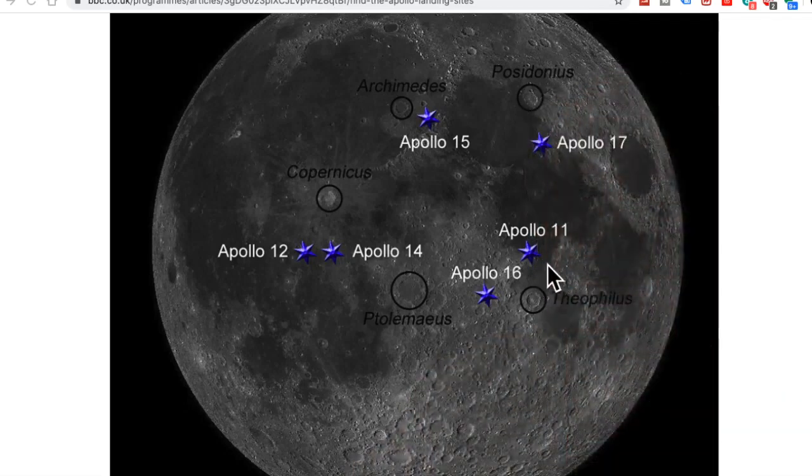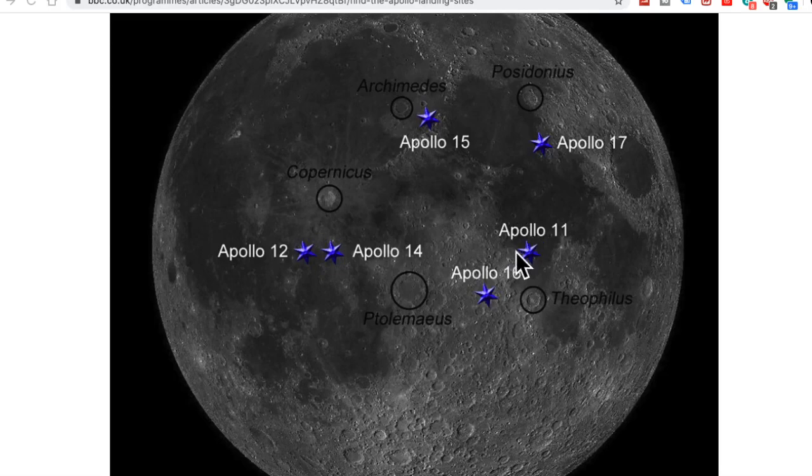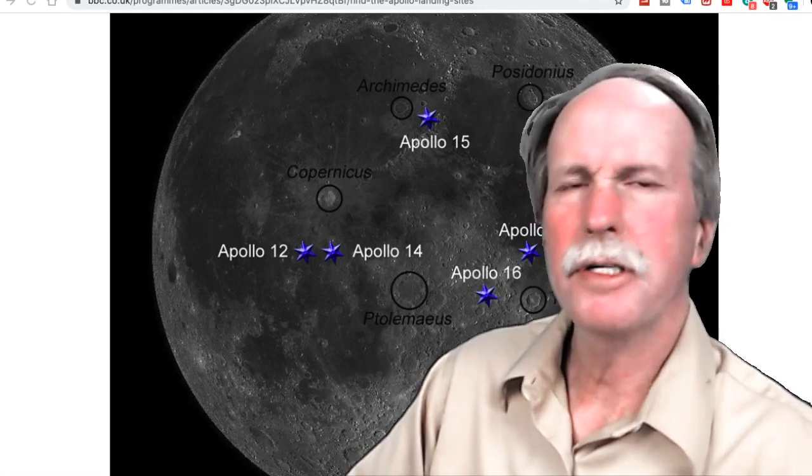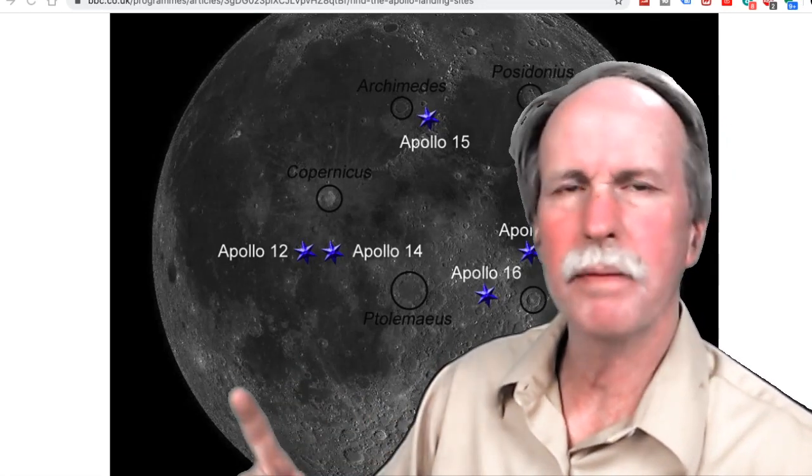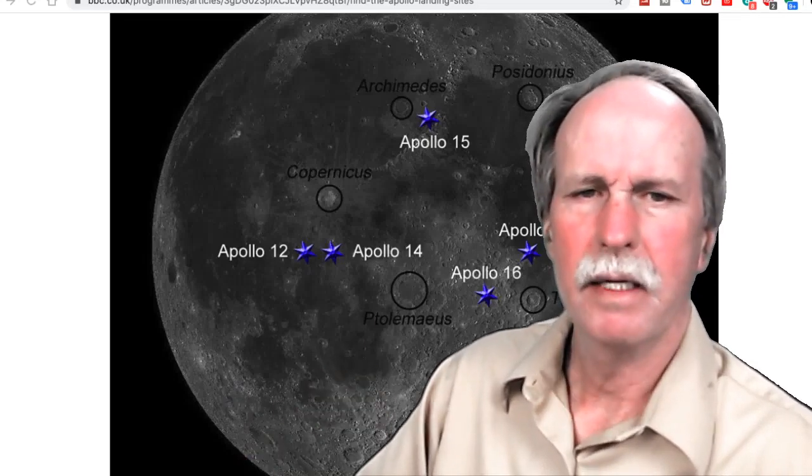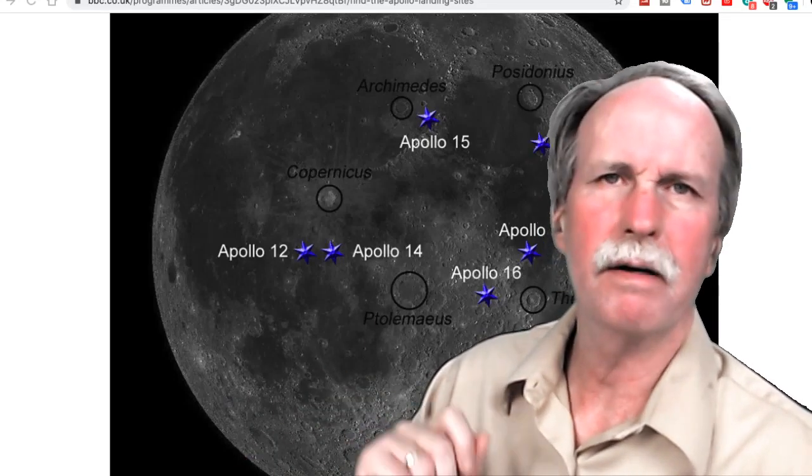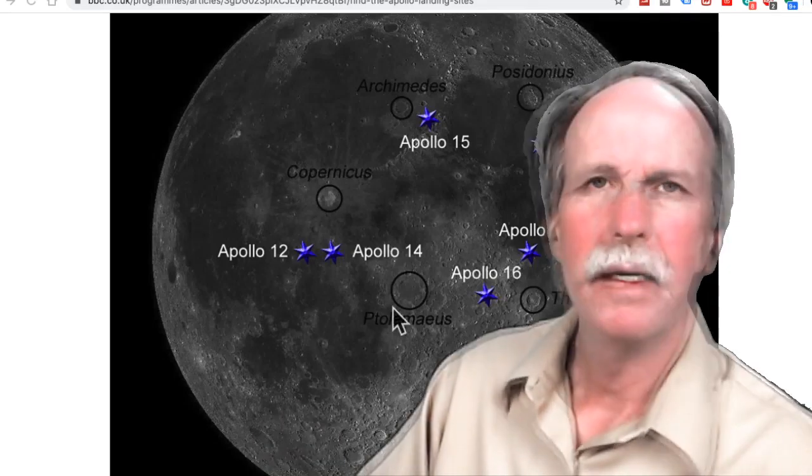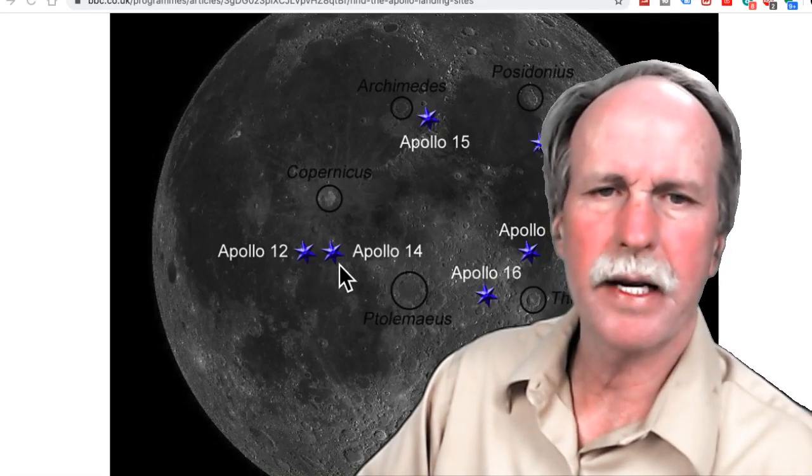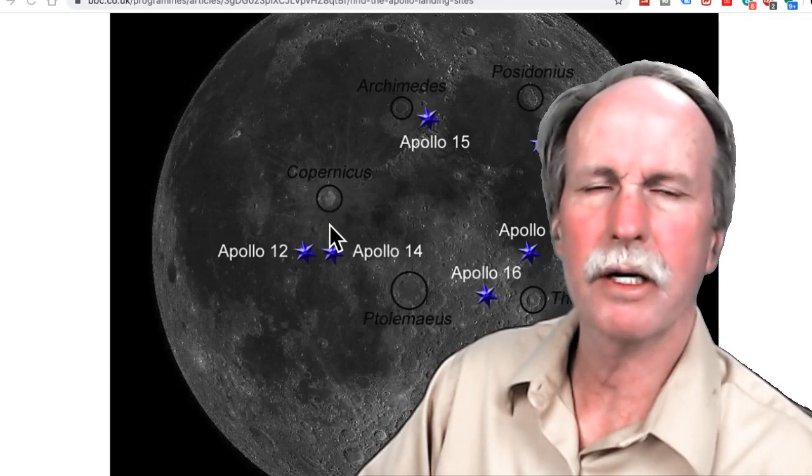Apollo 11 of course landed in the sea of tranquility down here at the southern aspects near this little range of mountains. Apollo 13 had a problem on the way to the moon. It did orbit the moon but it didn't land. Apollo 12 and Apollo 14 however landed over by the sea of islands and you can see their locations right here just south of the crater Copernicus.